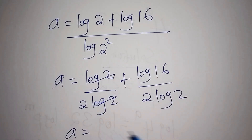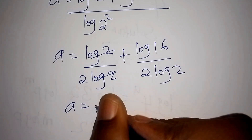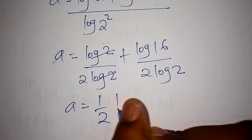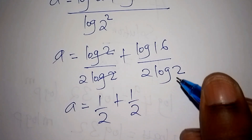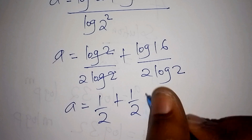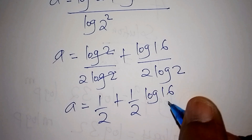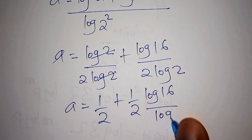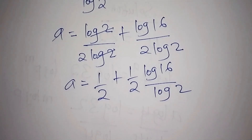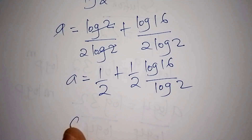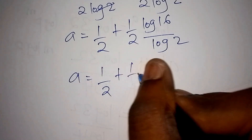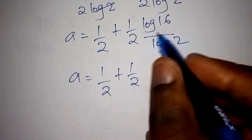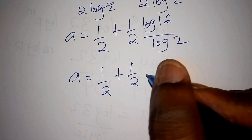So log 2 and log 2 shall cancel. Now our a shall be equals to 1 over 2, plus 1 over 2. We shall now have 1 over 2 plus 1 over 2, and the log of 16 term simplifies further.